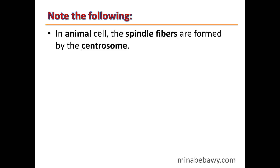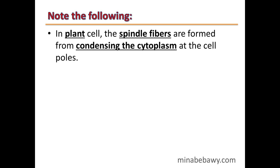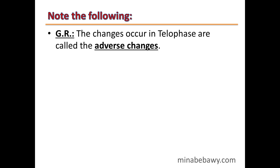Note the following: in animal cells, the spindle fibers are formed by the centrosome — a part of the animal cell responsible for spindle fiber formation. In plant cells, the spindle fibers are formed from condensation of the cytoplasm at the cell poles; this jelly-like cytoplasm is responsible for spindle fiber formation in plant cells.